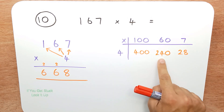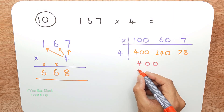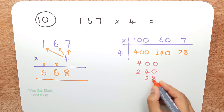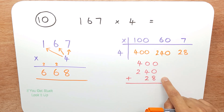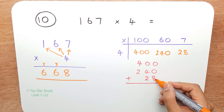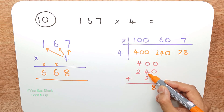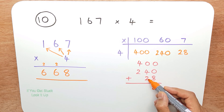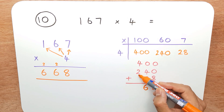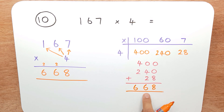My final step is to add these three numbers in column addition: four hundred, add two hundred and forty, add twenty-eight. Zero add zero is zero, add eight is eight. Zero add four is four, add two is six. And finally the third column: four plus two is six, plus nothing is six. So the answer is six hundred and sixty-eight — the same as before.